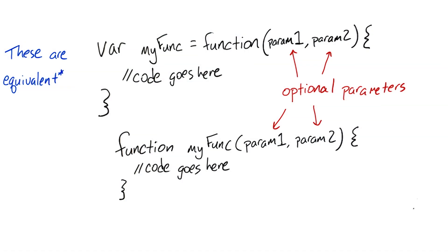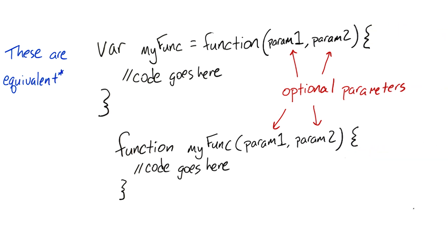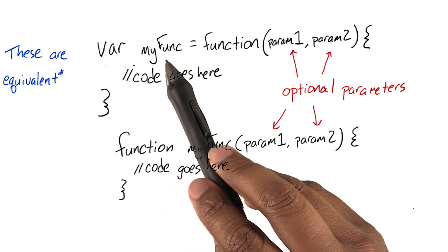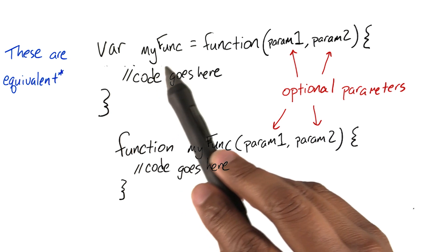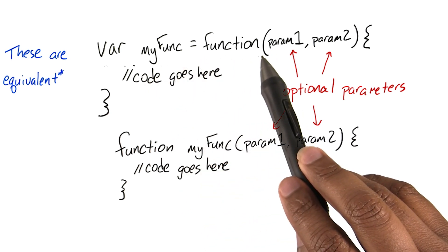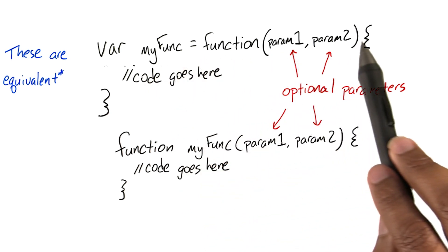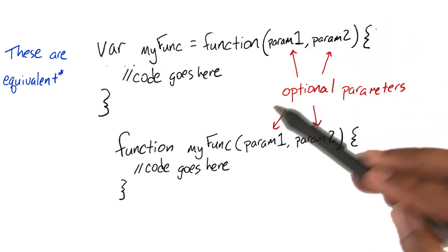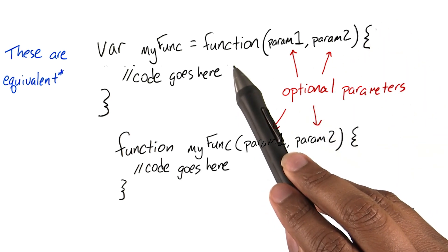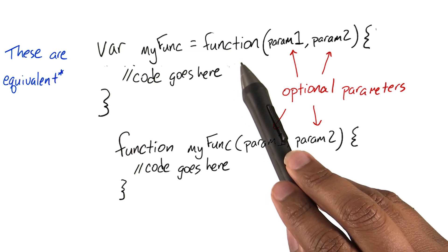Functions in JavaScript can be defined with two different syntaxes. The first should look pretty familiar if you've been paying attention. We start with var, followed by the function name — in this case, myfunc — equals, and then the keyword function, an optional parameter list, and then the body of the function. This keyword function tells the JavaScript engine that we're making a function.